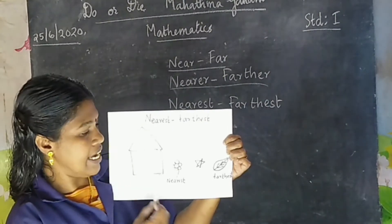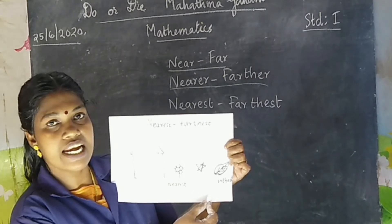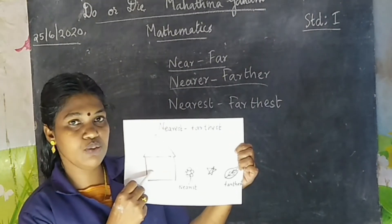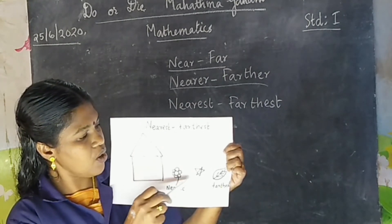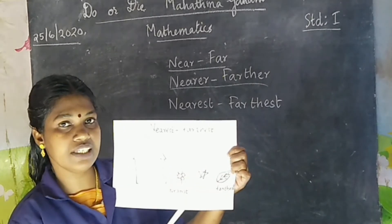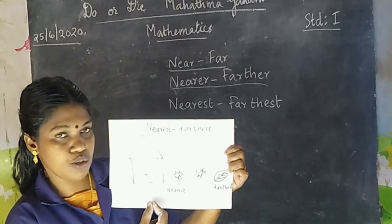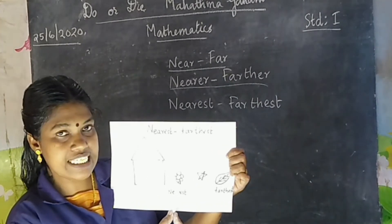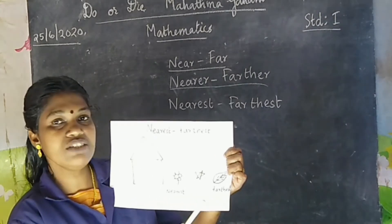Here we have a house, a flower, a star, and a leaf. Which one is nearest to this house? Which one is nearest to this house? Flower or star or leaf? This flower is nearest to this house. And which one is farthest?